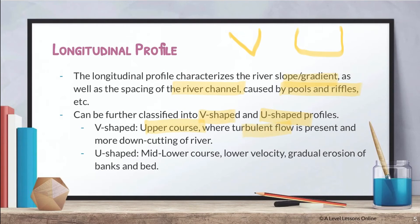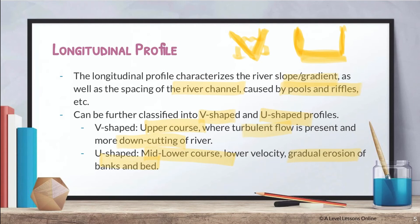A V-shape usually occurs at the upper course where there is turbulent flow and more downcutting of the river. Downcutting is an erosion process that cuts the river downwards, forming a very distinct V-shape. At the mid-to-lower course, there is lower velocity, so instead there is gradual erosion of the river banks and river bed through hydraulic action and abrasion, forming a U-shape rather than a V-shape.